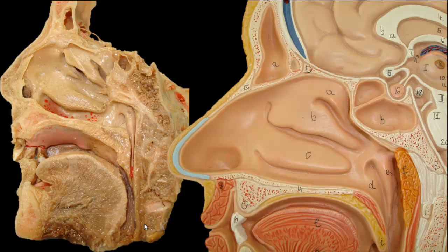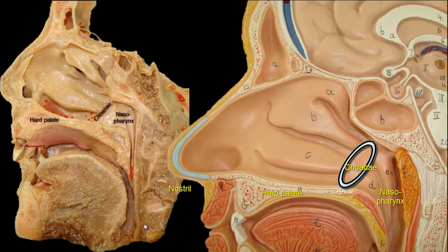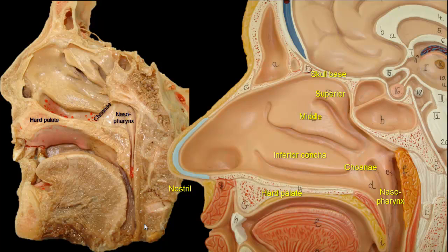The cavity of the nose communicates with the exterior through the nostrils, and opens posteriorly into the nasopharynx through the choanae. The floor of the nose is the roof of the mouth, formed by the hard palate, and the roof of the nose is at the base of the skull. Three nasal conchae, also called the turbinate bones, project from the lateral wall of the nose as shelves. In some persons, the turbinates can be excessively large, resulting in significant nasal obstruction. The conchae increase the respiratory surface of the nose.